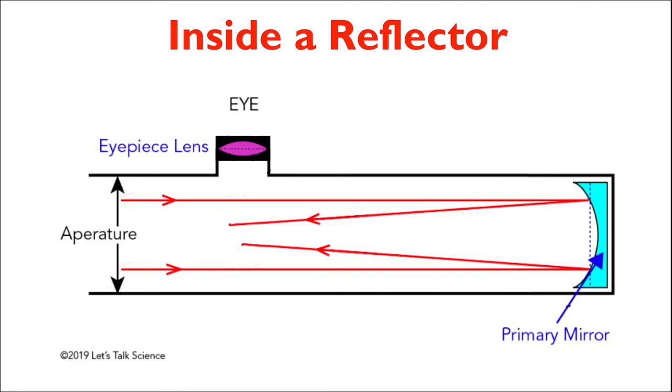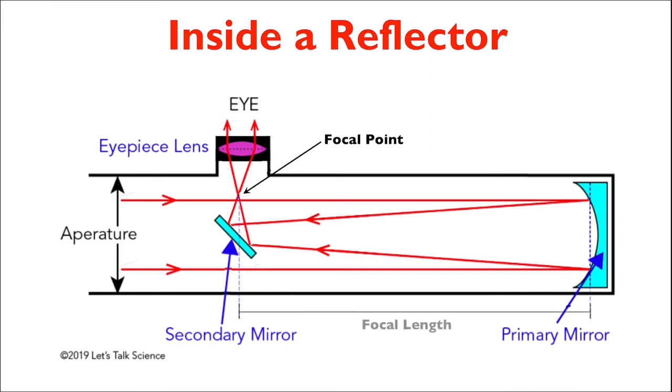Let's first look at the Newtonian reflector, the most common focal type, which places a secondary mirror just before the natural focal point of the converging rays of light. This secondary mirror reflects the light out of the telescope and towards the eyepiece. It is in this short distance between the secondary mirror and the eyepiece that the light rays can converge at a focal point and diverge again into the ocular lens. This position of the focal point helps determine the focal length of the primary mirror.